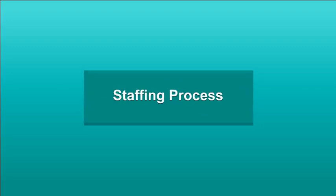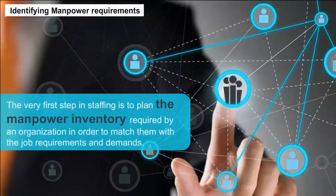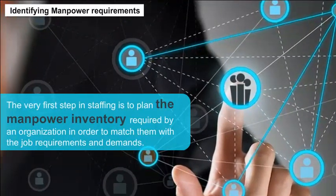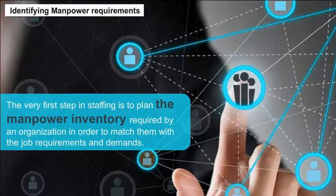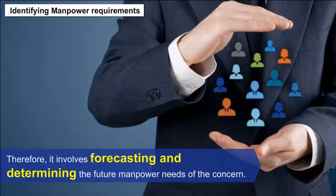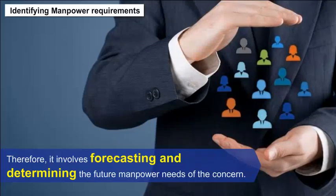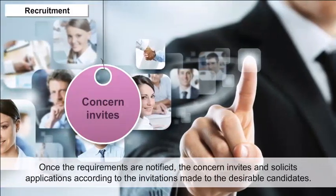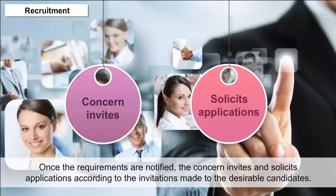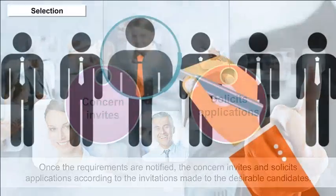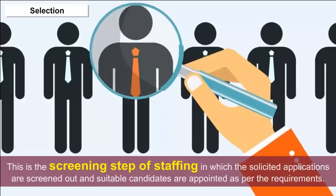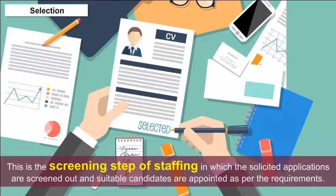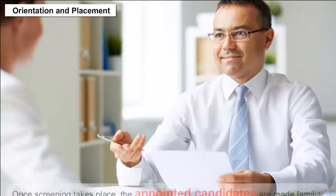Staffing Process: The very first step in staffing is to plan the manpower inventory required by an organization in order to match them with the job requirements and demands. Therefore, it involves forecasting and determining the future manpower needs of the concern. Once the requirements are notified, the concern invites and solicits applications according to the invitations made to the desirable candidates. The screening step of staffing involves screening out solicited applications and appointing suitable candidates as per the requirements.